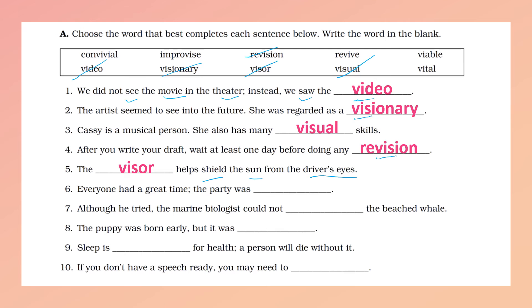Number seven: 'Although he tried, the marine biologists could not...' — could not what? Revive. Remember this one refers to 'life' — revive — the beached whale. I will leave numbers eight to ten as homework. So we have viable, vital, and improvise — use them to complete sentences eight, nine, and ten.